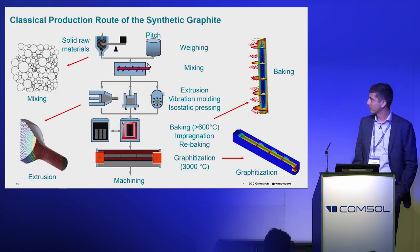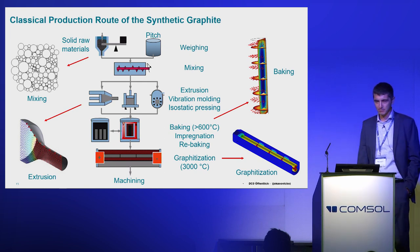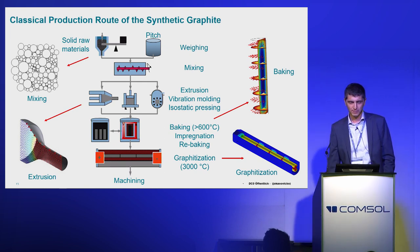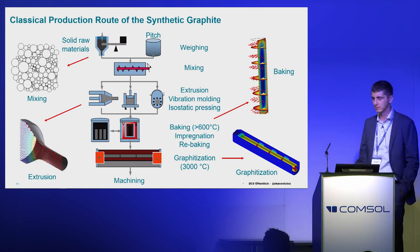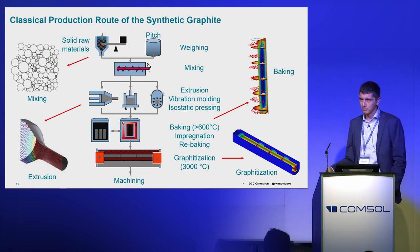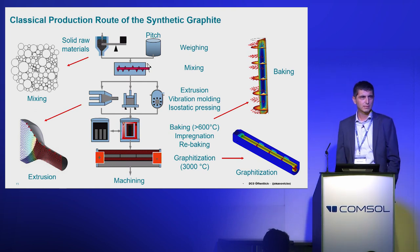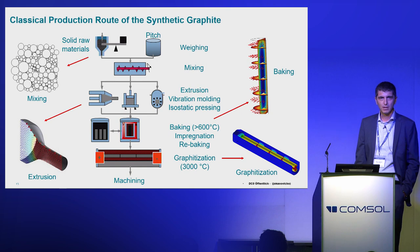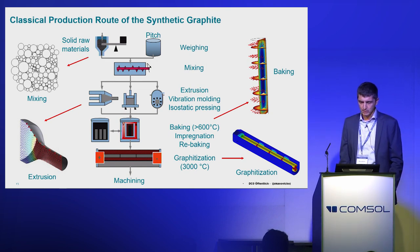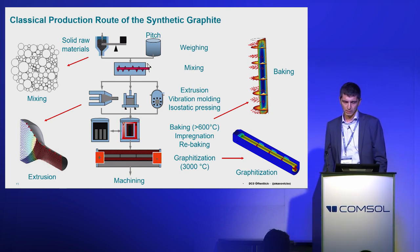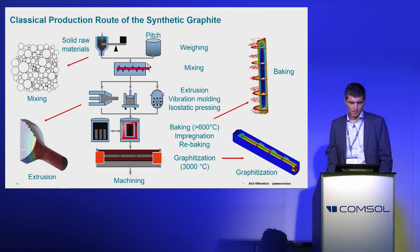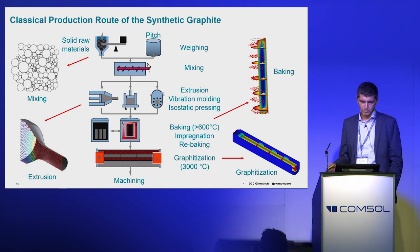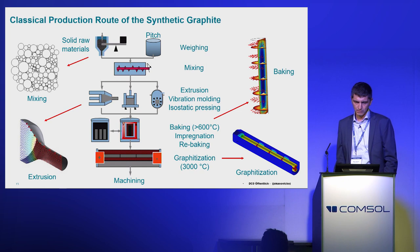Regarding production, this would be a classical route for producing synthetic graphite, where you have raw materials that you mix, then green forming similar to the ceramic industry, and two high-temperature processes. First we call baking, typically about 600 to 1,000 degrees Celsius. The other one is graphitization, which is heating by current and goes up to 3,000 degrees Celsius. Many of these processes are simulated in our company.